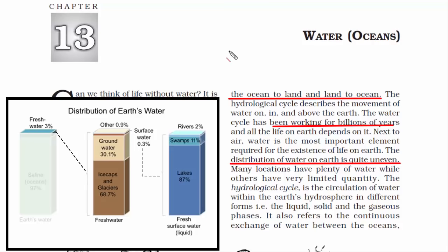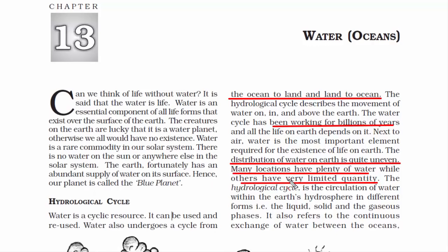Another important aspect is that many places on Earth have plenty of water while others have very limited quantity. Looking at these statistics is what makes water a rare commodity, and it is also highly exploited.